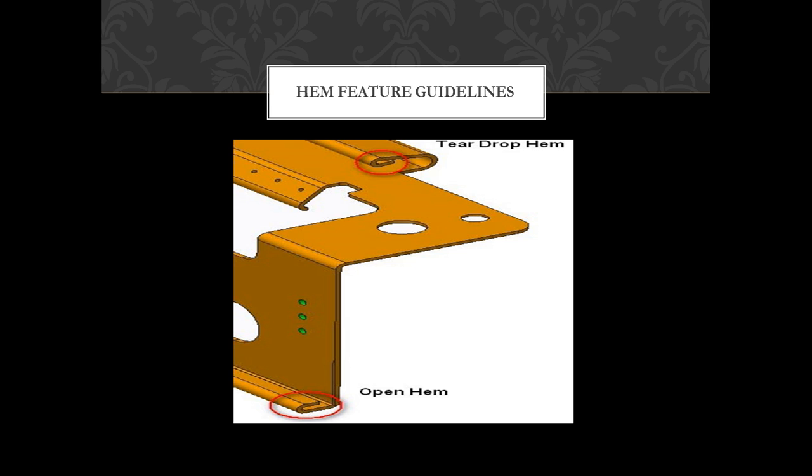It is recommended that for teardrop hems, the inside diameter should be equal to the material thickness. For open hems, the bend will lose its roundness when the inside diameter is greater than the sheet metal thickness. For bends, the minimum distance between the inside edge of the bend and the outside of the hem should be five times the material thickness plus bend radius plus hem radius.